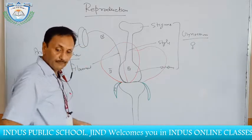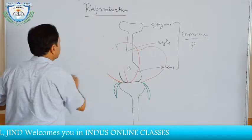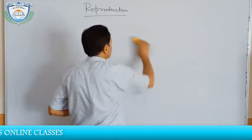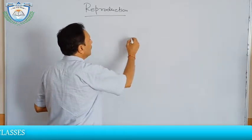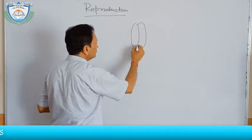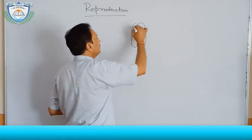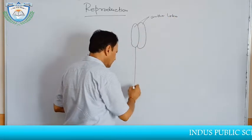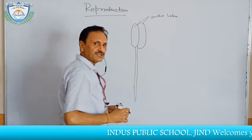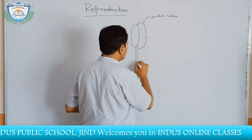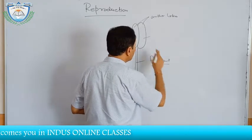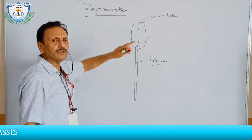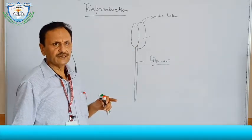Now we will discuss the male part of the flower. In the male part, the anther is present. A typical anther has two lobes, both called anther lobes, with an attached filamentous structure called the filament. We will discuss in later classes that on the basis of attachment of the filament to the anther, it is classified as dorsifixed, versatile, adnate, etc.